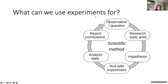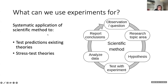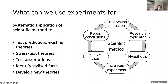What can we use experiments for? Economics experiments are a systematic application of scientific methods. We can use them to test predictions of existing theories, stress-test theories, test assumptions, identify stylized facts, and develop new theories. The scientific method involves finding an observational question of interest, researching it, formulating a hypothesis, designing an experiment, analyzing data, reporting conclusions, and iterating. In the rest of the talk, I'd like to focus on testing the assumptions of neoclassical economics.